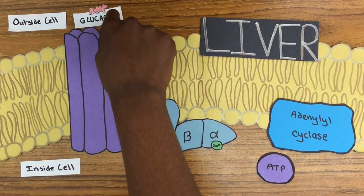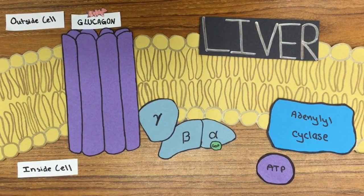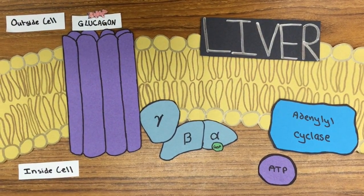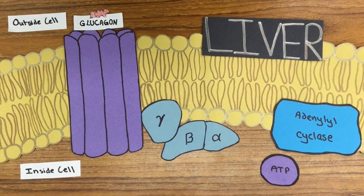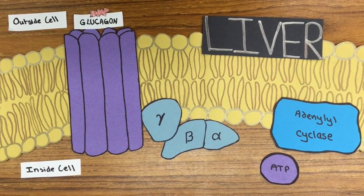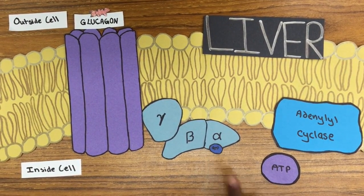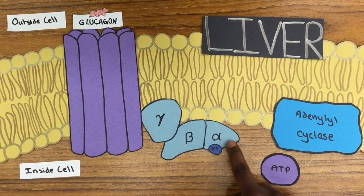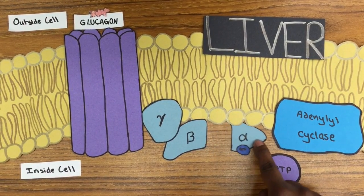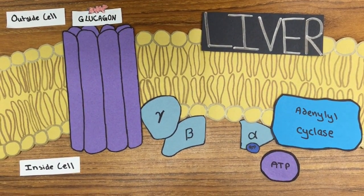This activates a change in the structure, which leads to the activation of a G-protein, which has three subunits: alpha, beta, and gamma. However, when the G-protein binds to the GPCR, the GDP molecule that was on the alpha subunit is substituted with a higher-energy GDP molecule, which causes the alpha subunit to detach.